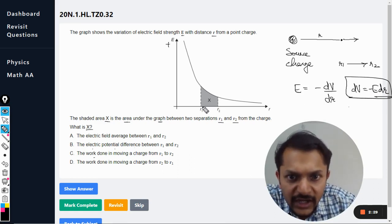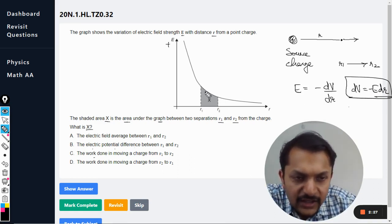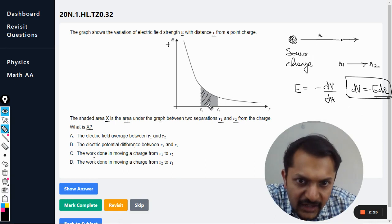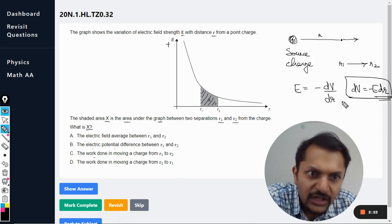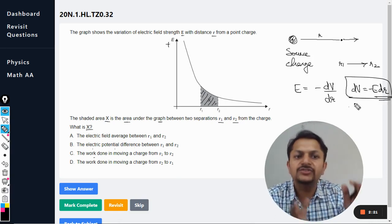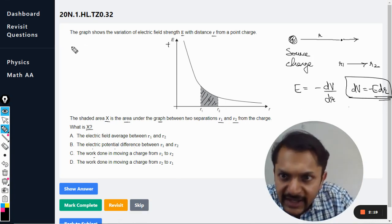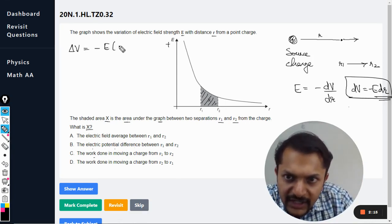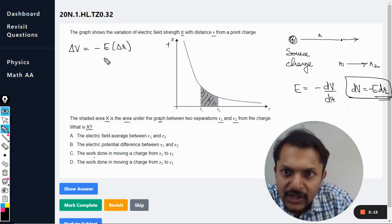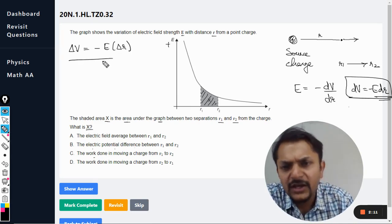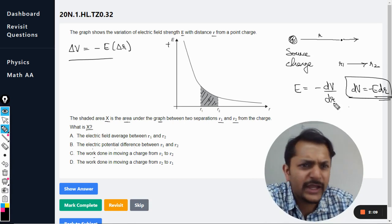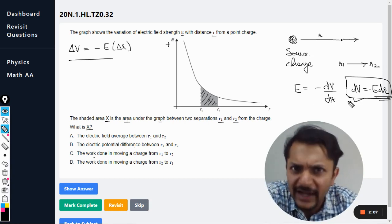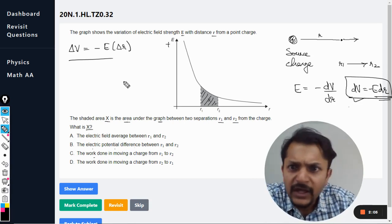What is E dot dr? E dot dr is basically the area under the graph. So we are looking at the potential difference. It can be written as delta V is equal to negative of E into delta r. This becomes a question of calculus to find the area, like when we write in terms of d.